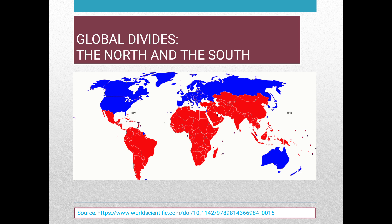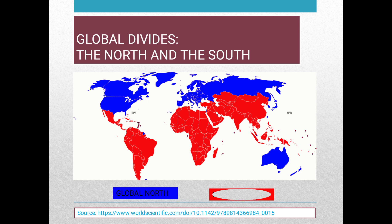On your screen, you see the world map. The countries in blue color belong to the Global North, and the countries in red color belong to the Global South.